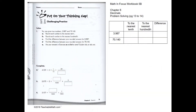Challenging practice: you're given two numbers, 3.987 and 40.140. Round each number to the nearest tenth. There's the tenth place, and to round to the nearest tenth, look at the next place value, which is the hundredths. Since 8 is more than 5, we have to go up to the next highest tenth value.